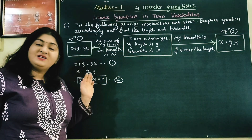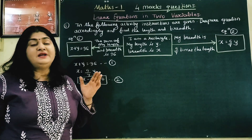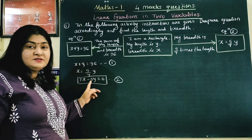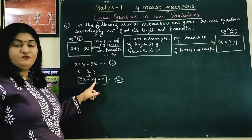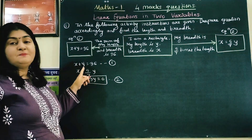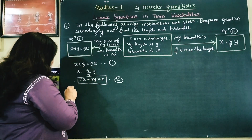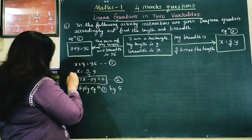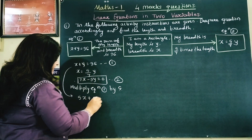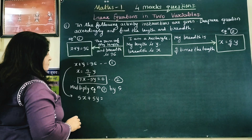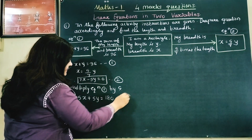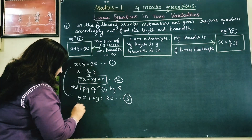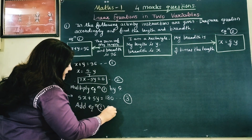Now I am going to eliminate Y. I chose Y because it is positive in equation 1 and negative in equation 2 — opposite signs make elimination easy. The coefficient of Y in equation 2 is 5, so I need 5 in equation 1 as well. I will multiply equation 1 by 5 to get 5X plus 5Y equals 180. This is equation 3.